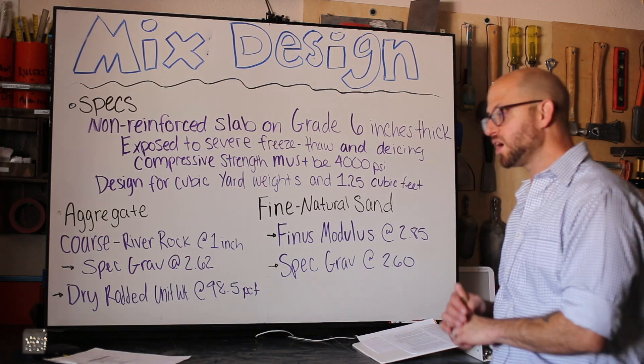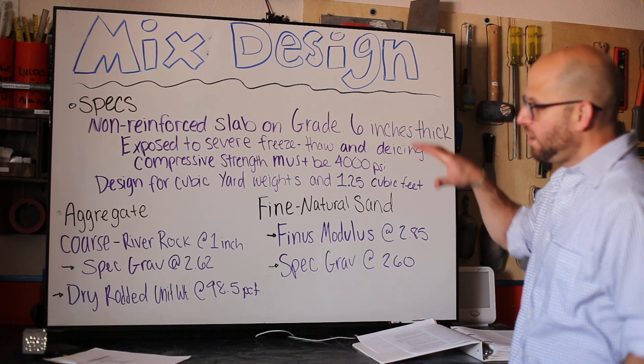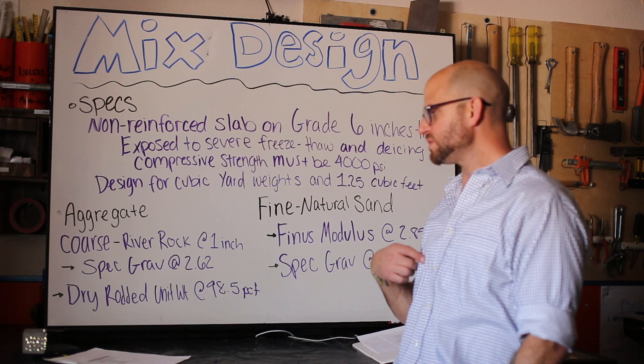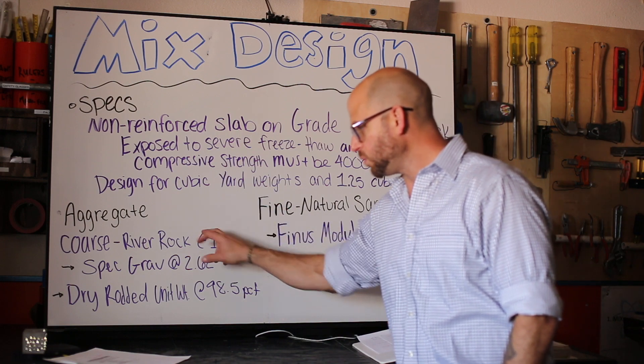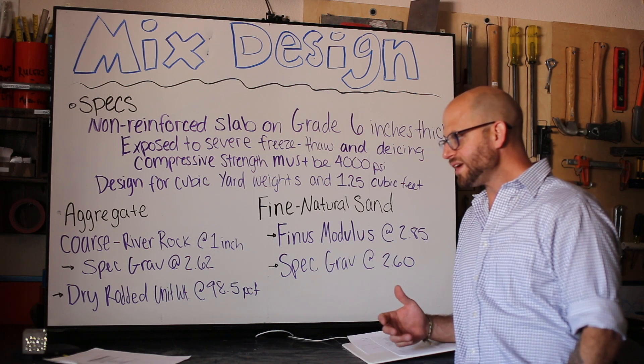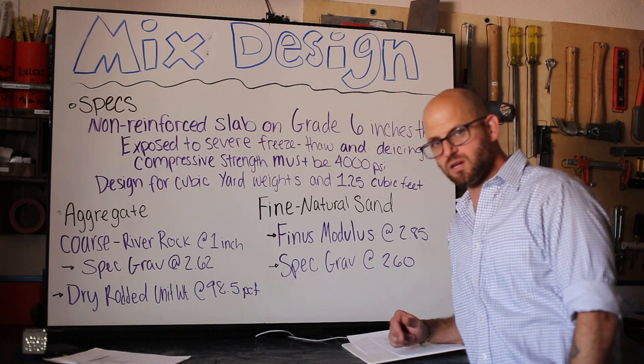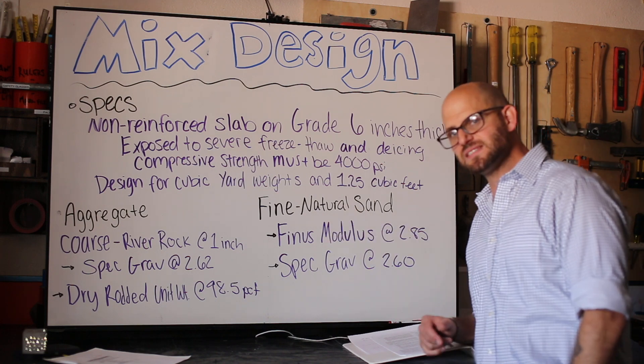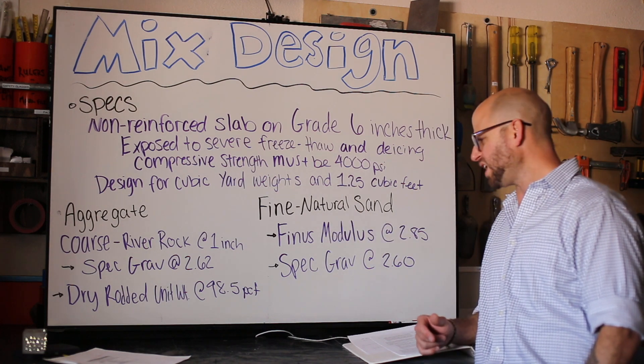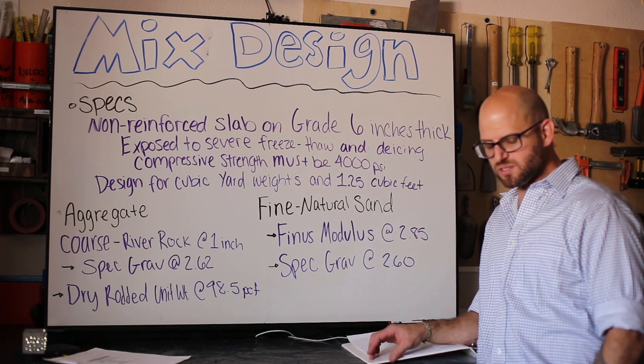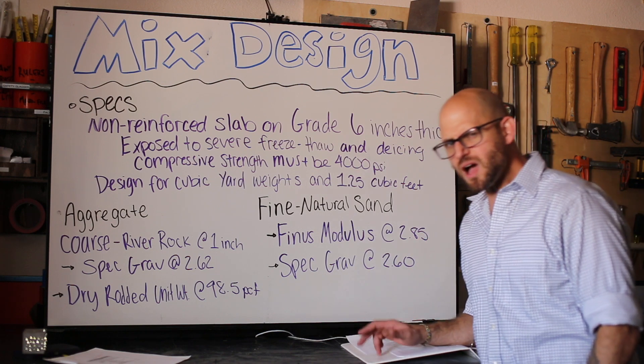All materials we're using: Type 1-2 C-150 Portland cement, aggregate river rock so it's rounded, specific gravity and dry unit weight, dry rodded unit weight are all given to us from the aggregate provider. Then we've got an ASTM C-33 natural concrete sand, fineness modulus and specific gravity is also included.